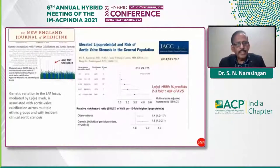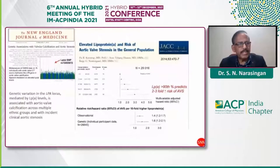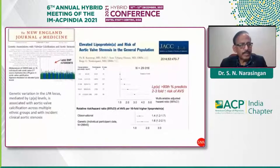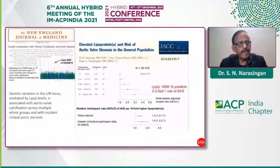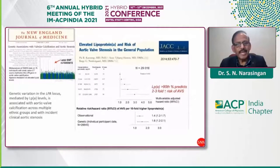Another important complication related to lipoprotein(a) is aortic valve disease. A landmark article published in the New England Journal of Medicine presented a meta-analysis of nearly 7,000 individuals with aortic valve CT scans, implicating the lipoprotein(a) gene in aortic valve calcification. This appears to be mediated by lipoprotein(a) levels, providing definite evidence of genetic dependence in developing aortic stenosis.